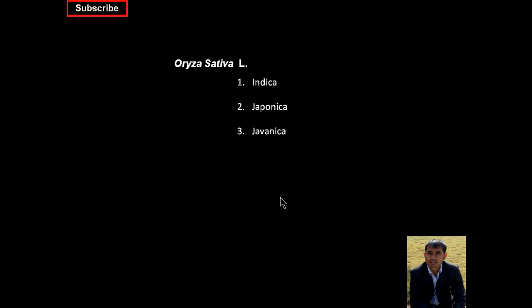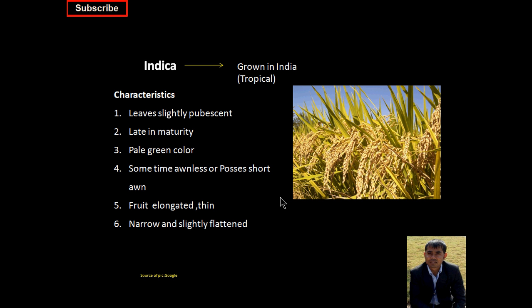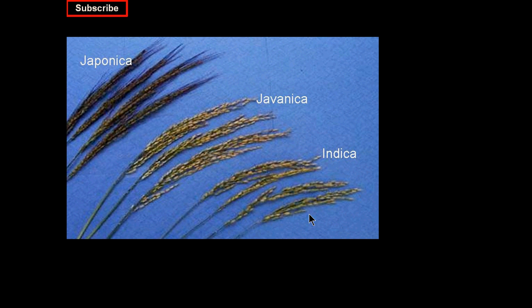Now moving to Oryza sativa, it has three different subspecies: Indica, Japonica, and Javanica. Indica is mainly grown in India, Japonica in Japan, and Javanica in Indonesia. Starting with Indica — it is basically a tropical rice. The leaf is slightly hairy and it is a late-maturing rice species. Its leaf is pale green, meaning lighter in color. Sometimes it is awnless or sometimes it has very small awns on the lemma. The fruit is elongated, thin, narrow, and slightly flattened. This is the picture of the Indica — you can see here the panicle of the Indica.